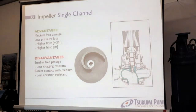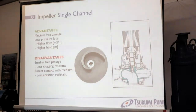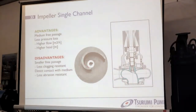Disadvantages are the smaller free passage compared to the vortex pump, making it automatically less clogging resistant. There is direct contact with the medium at the impeller vanes because this impeller directly pushes the medium away — we are talking about a direct pumping effect, not indirect. Due to this direct contact with the medium, we are also talking about a less abrasion-resistant impeller form.